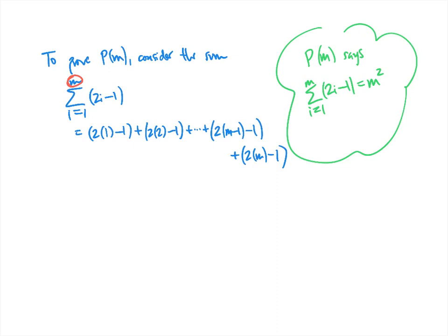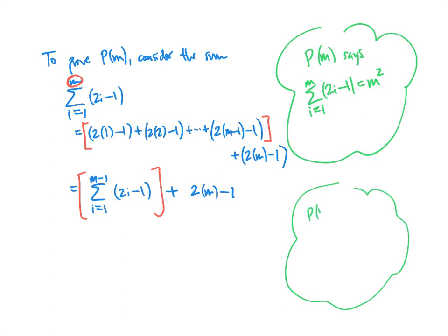The key observation is: if we group together everything but the last term, that is the sum as i goes from 1 to m minus 1 of 2i minus 1, and then we're still adding 2m minus 1. That red-bracketed sum is everything up to m minus 1. Since we've proved P of m minus 1, that sum equals m minus 1 squared. So by our assumption, we have m minus 1 squared plus 2m minus 1.